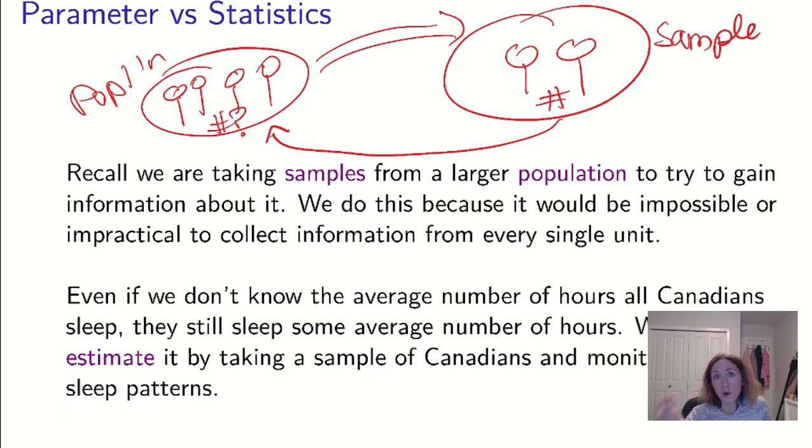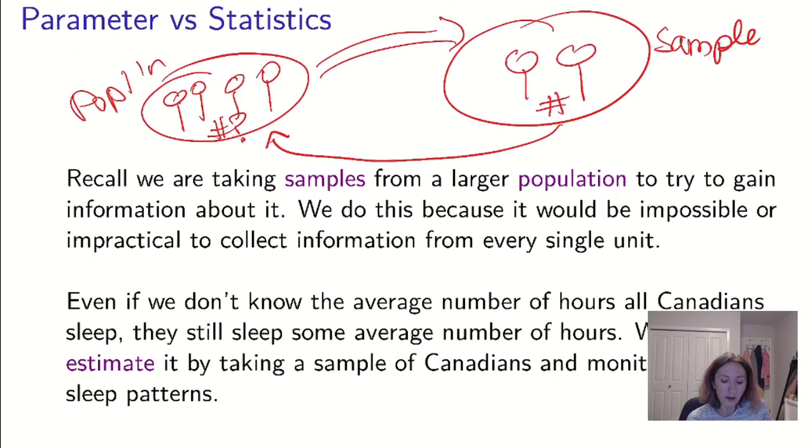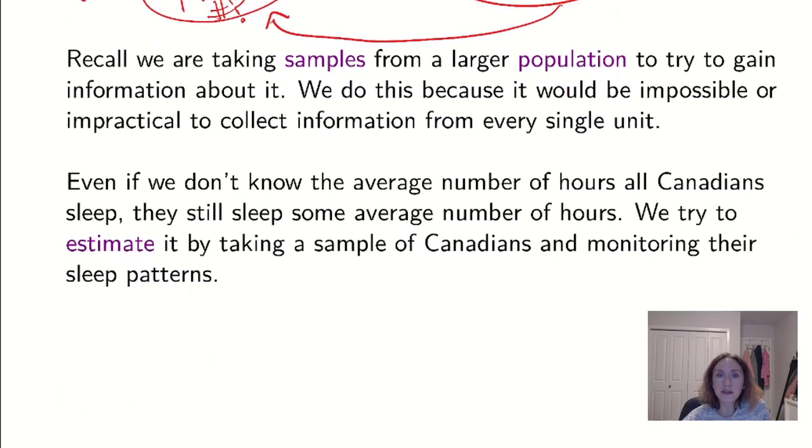So we can think that one is a true value and one is going to be an estimate. The number that is talking about the population is the true number that we know about everything. The sample value is only about the people in the sample, but we hope with a good representative sample it will tell us about the population. Even if I don't know the average number of hours all Canadians sleep at night, they still sleep some average number of hours, and I'm going to try to estimate by taking that sample and monitoring their sleeping patterns. Just because I can't get it doesn't mean that it doesn't exist.